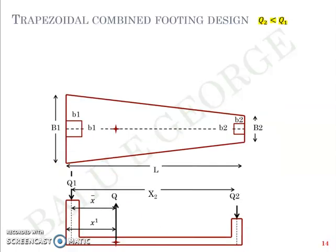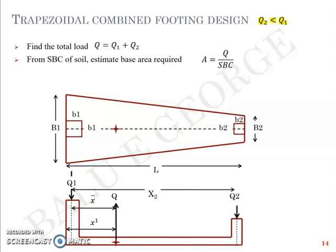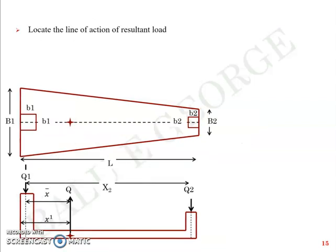Now we move to the discussion of the trapezoidal combined footing, the design theory. It's quite similar to the previous discussion we had on the combined footing in rectangular shape except for the fact that q2 is less than q1 here, which means the heavier column doesn't have the luxury to project the slab outwards, so there's a limitation there. In that case we'll be forced to move to trapezoidal combined footing. The first step is the same, you find the total load q, which is q1 plus q2, and from the safe bearing capacity of the soil given, you estimate the base area required or the least area to be provided to have on the safer side. A is equal to q by SBC, where q is equal to sum of q1 plus q2.